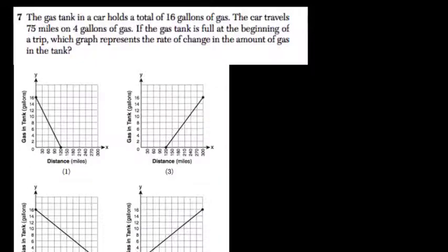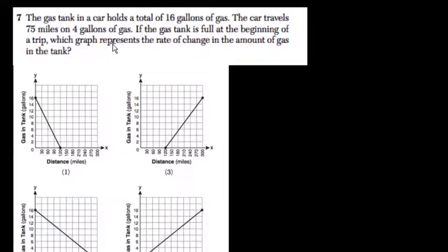Okay, the gas tank in a car holds a total of 16 gallons. The car travels 75 miles on 4 gallons of gas, so 16 in total, and uses 4 of those gallons to go 75 miles.